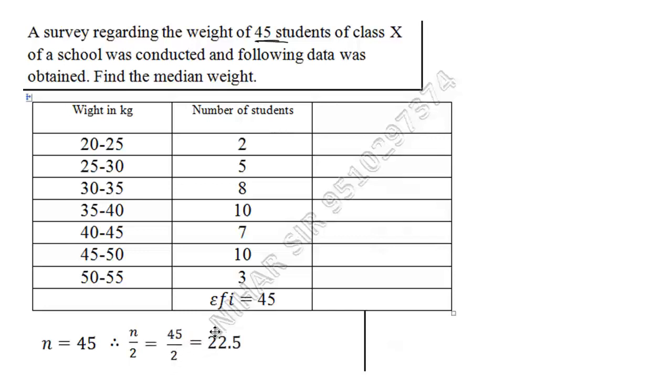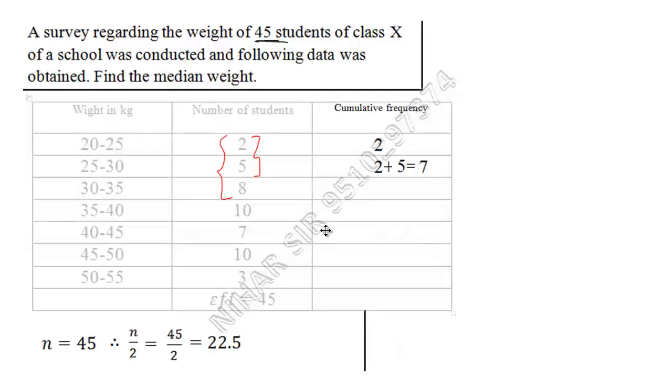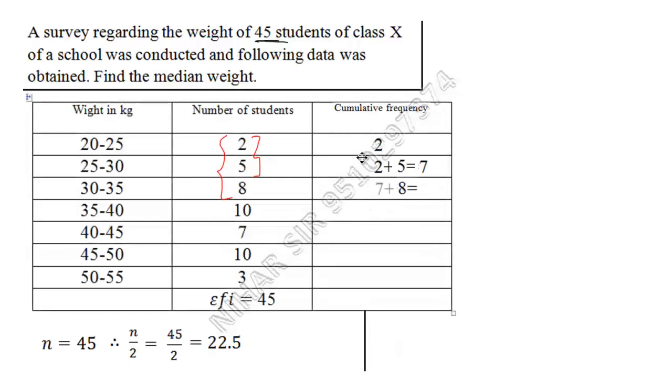Now after doing this, just fill this column. This column is for cumulative frequency, that is known as cf. cf is very easy. You need to copy this 2. Now for this box, what I will do is add these two, so 2 plus 5 is 7. Now for the next one, I have to add all three. It means 2 plus 5 plus 8, that is 15.